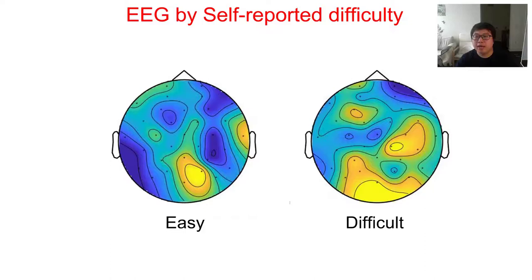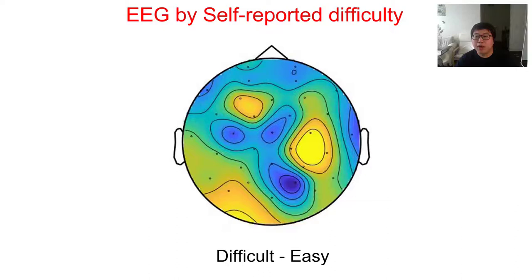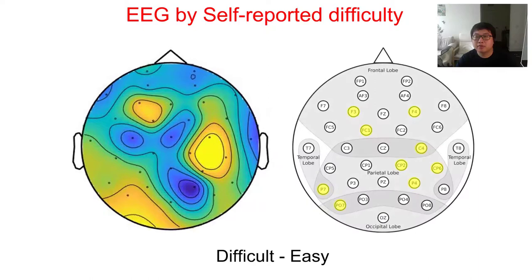Here is the EEG topographic map for the easy and difficult category. The color stands for the strength of the EEG signal. We can see clear differences between some brain regions, like the marked ones. To see the differences more clearly, we create a topographic map showing the differences between difficult and easy. We highlighted the electrodes that had clear differences on the right.